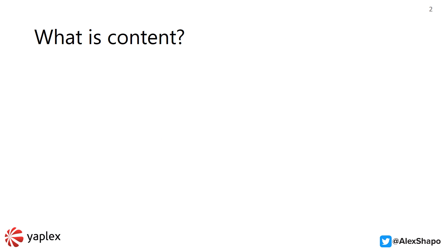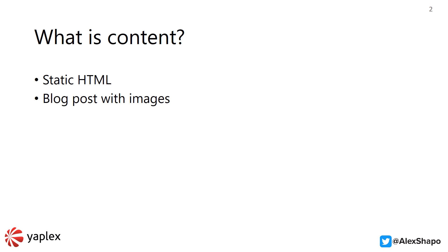Content is any type of information you want to publish on your website. It can be a static HTML page, a blog article with an image, a press release, or a news article. All these types of content contain information, but the information is located in different properties.